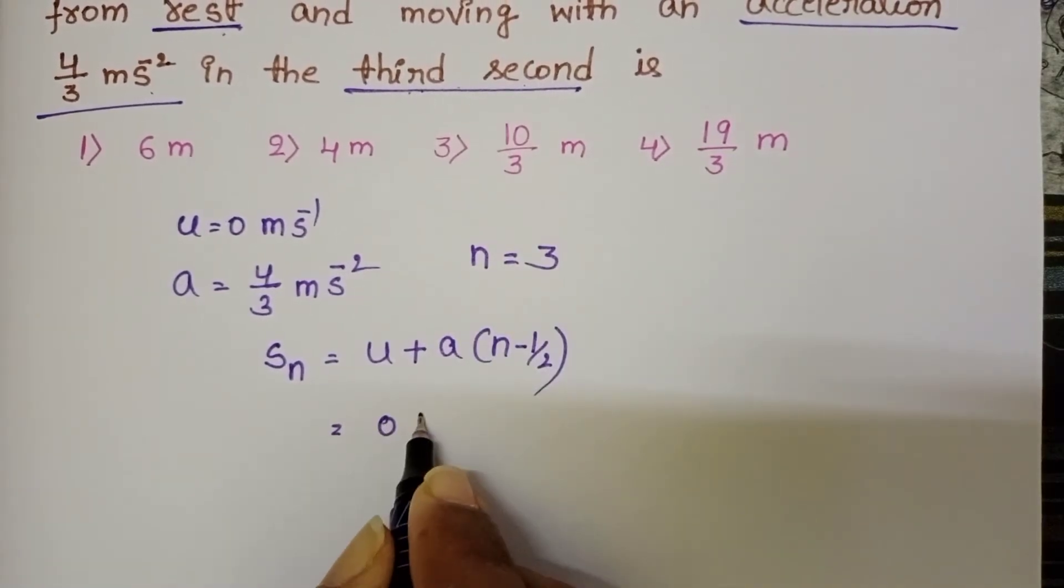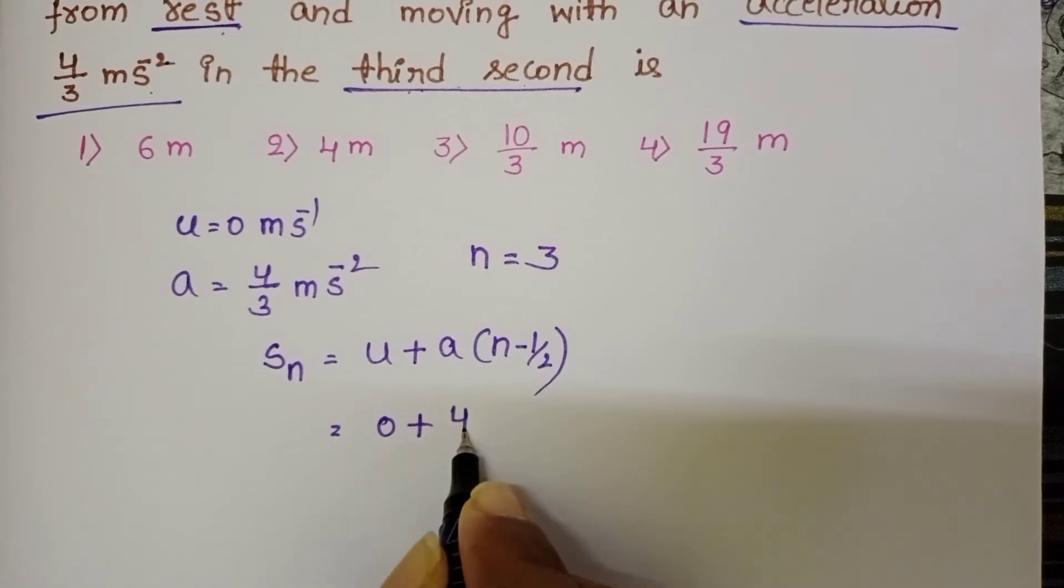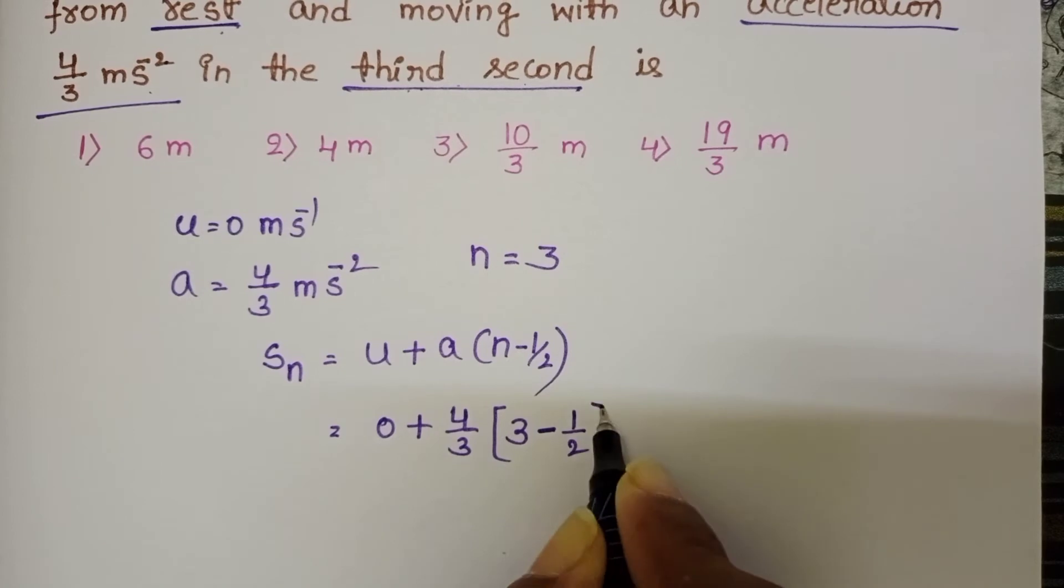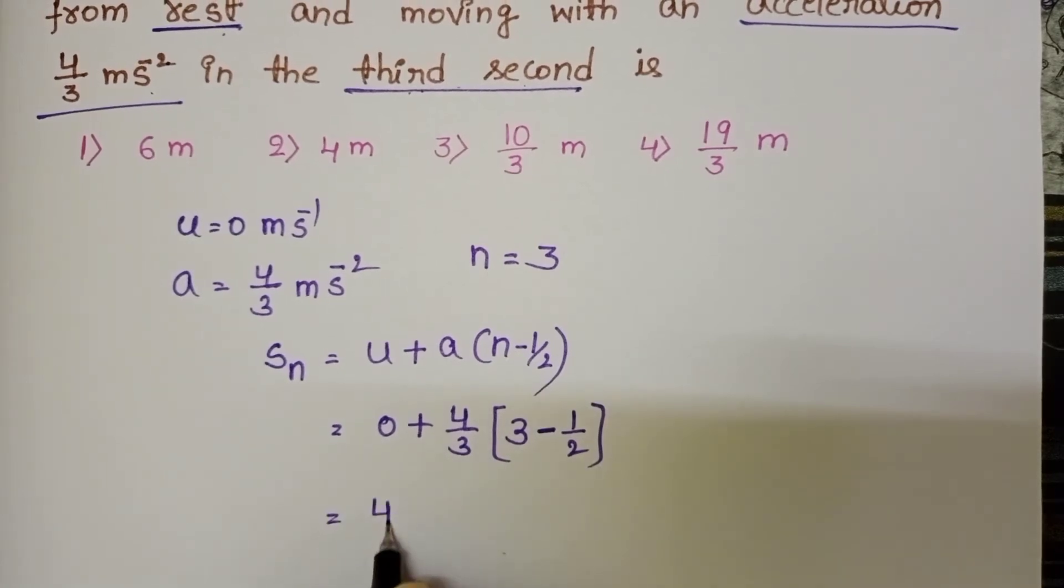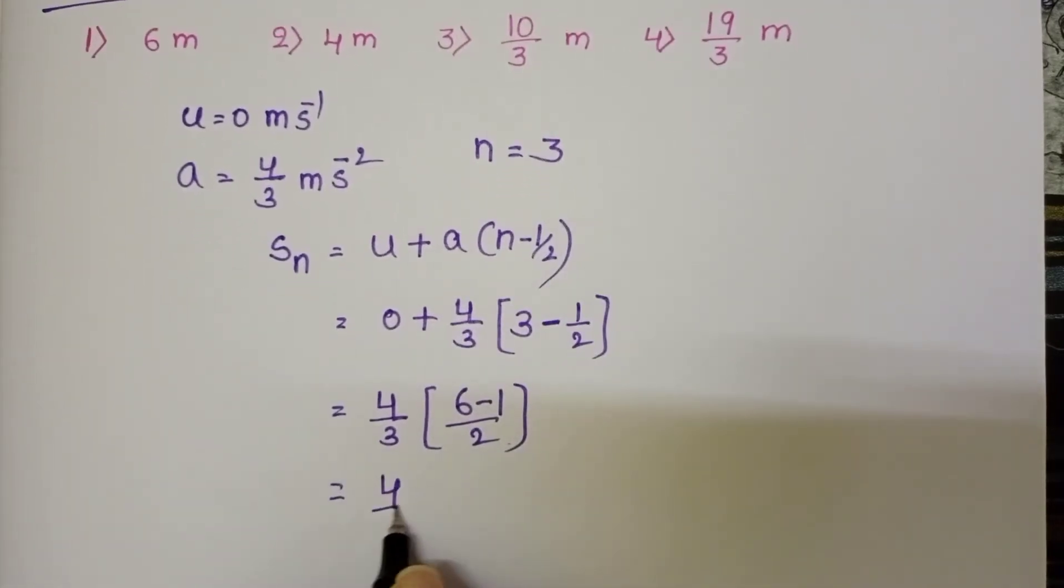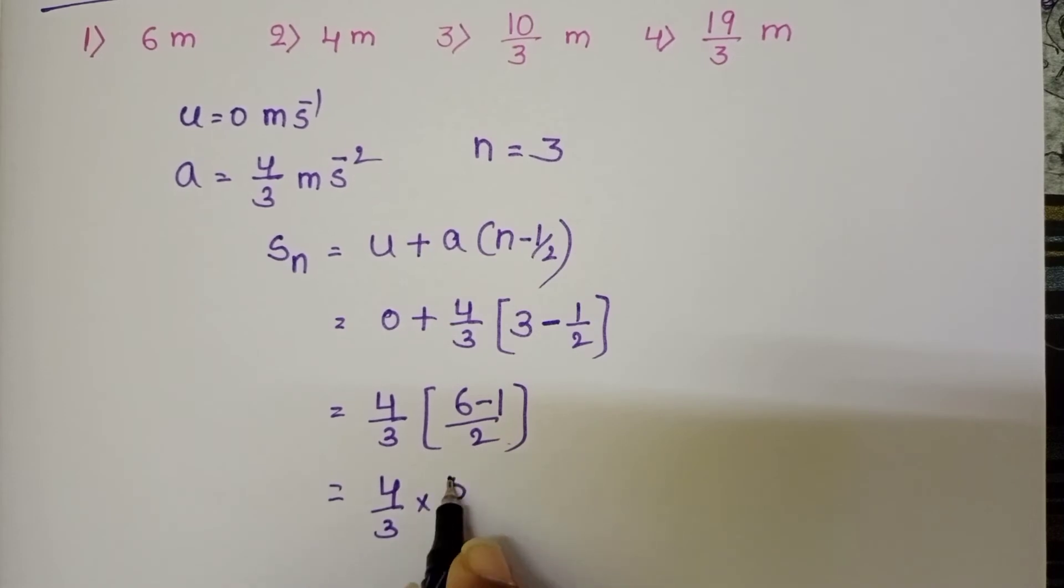Initial velocity is 0. Acceleration 4 by 3, in place of n, 3 minus 1 by 2. 4 by 3 into 6 minus 1 by 2. That is equals to 4 by 3 into 5 by 2.